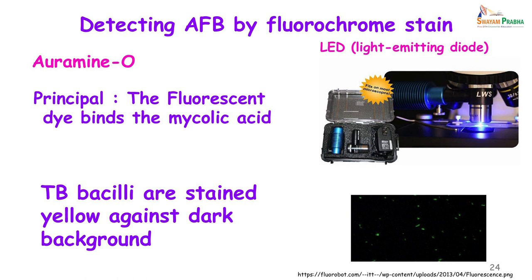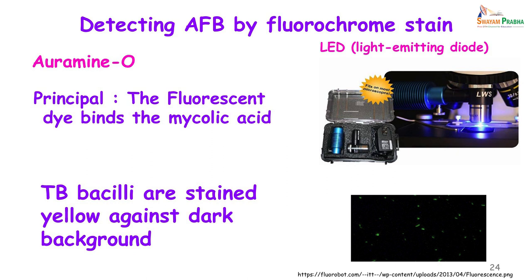If you want to hasten detection, you can detect the AFB by fluorochrome stain. We usually use auramine O or the auramine-rhodamine combination, and the fluorescent dye binds to the mycolic acid in Mycobacterium tuberculosis. The advantage of doing a fluorochrome stain is that you can look for bright yellow bacilli against a dark background and examine the smear under high power field, seeing a larger area at one time. The fluorescent microscope is very expensive — 6 to 8 lakhs — and therefore today this has been replaced by the light-emitting diode, an objective which has this facility without requiring a full fluorescent microscope.